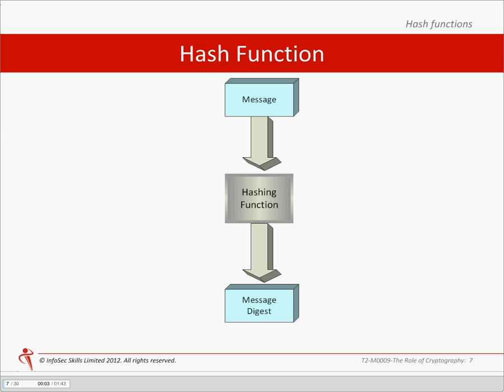Hash functions are one-way functions and are used in the production of message authentication codes and digital signatures. You take a block of data of any length, for instance an email message, and press it through the hashing algorithm. The result is called the hash, or message digest. The message digest is of fixed length, and the length depends on the algorithm being used.